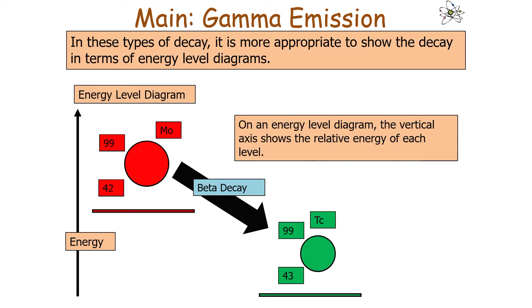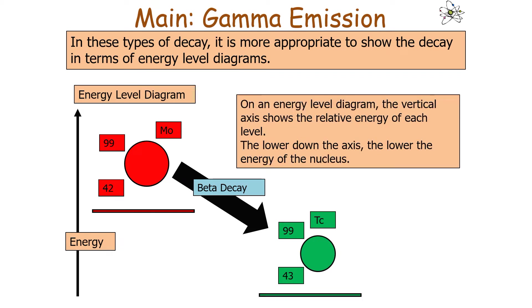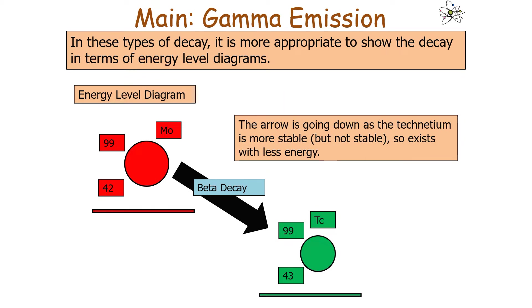On an energy level diagram, the vertical axis shows the relative energy of each level. The lower down the axis, the lower the energy of the nucleus. In this case, the arrow is going down because the technetium is more stable, but not completely stable, so it exists with less energy.